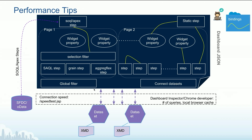Things we shouldn't forget about: connection speed can play a role, as can the browser or the power of the machine we're displaying the data on or querying from. In rare cases, depending on the data volume and the queries, the type of browser you are using can affect some of these things. We are going to show you the dashboard inspector in a bit, which lets you know about the queries and gives you an idea of which queries are slow.